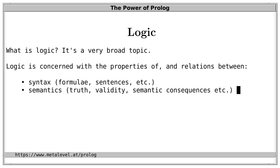Semantics — that is, assigning meaning to the syntactic constructs of these languages. This includes, for example, defining how sentences are interpreted and stating under what conditions they are true. A sentence that is true under all possible interpretations is called valid. And of course there are relations between sentences: if a sentence A is always true when sentence B is true, then A is called a semantic consequence of B.